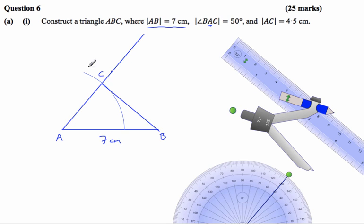Finally I'm just going to label this angle 50 degrees, and then AC was 4.5cm.